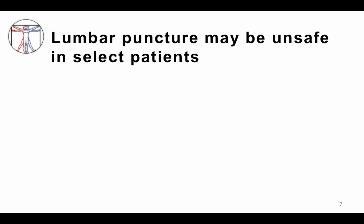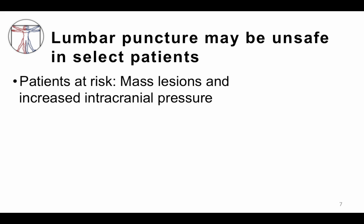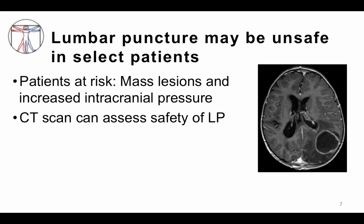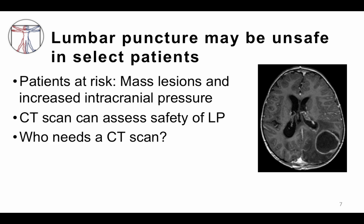Lumbar punctures are for the most part very safe, but in select patients the lumbar puncture may not be safe. People at risk are those with mass lesions or increased intracranial pressure, because you could have herniation if you performed a lumbar puncture and decreased the pressure below this high-pressure area. A CT scan can be used to assess the safety of a lumbar puncture by looking for evidence of a mass lesion or increased intracranial pressure. Here you can see a large mass lesion in the brain on a CT scan. Is a CT scan recommended for all patients? It is not.